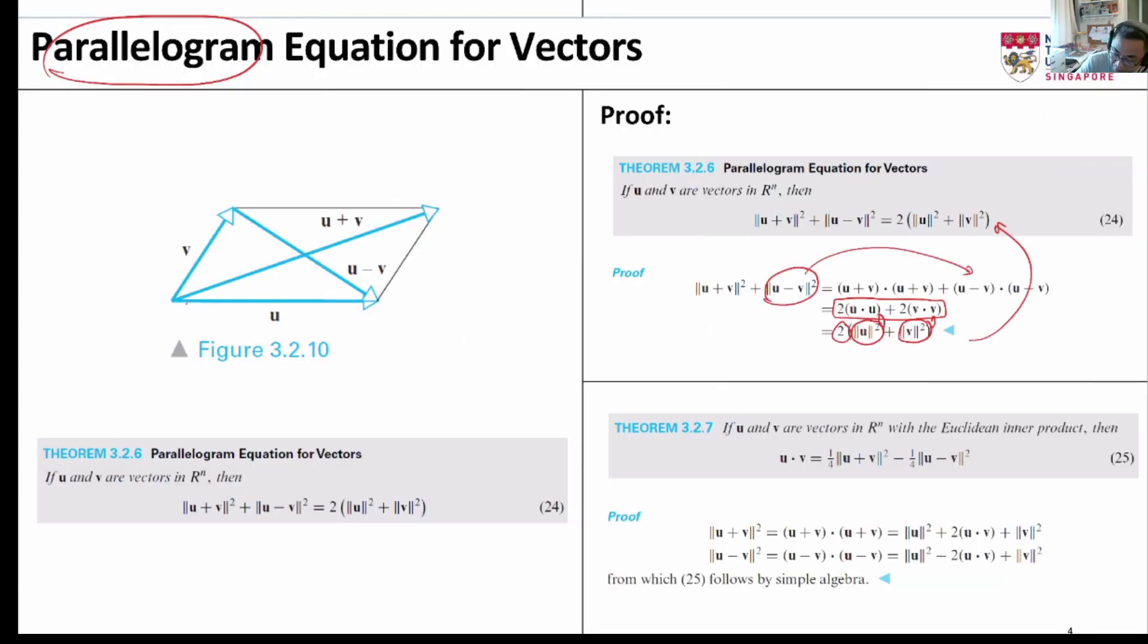This completes our proof of parallelogram equation for vectors. The last equation is a less famous cousin of the parallelogram equation and this is the expression and the proof over here which will leave it to you to do at home.